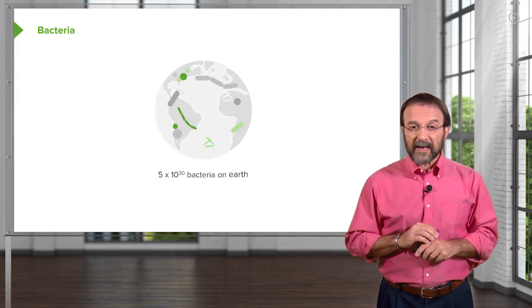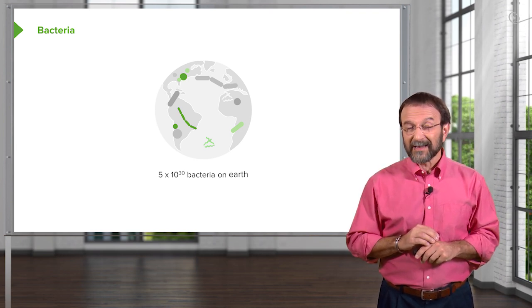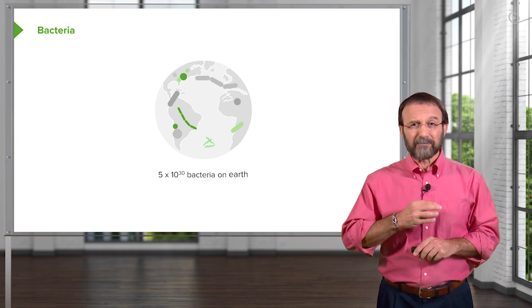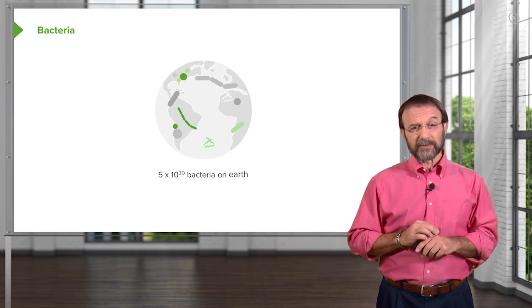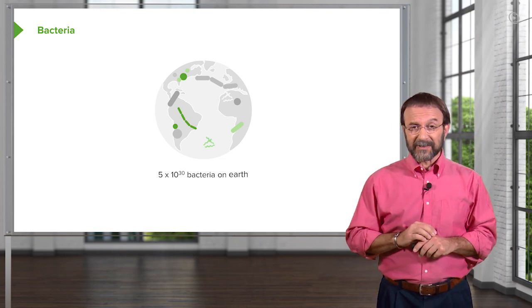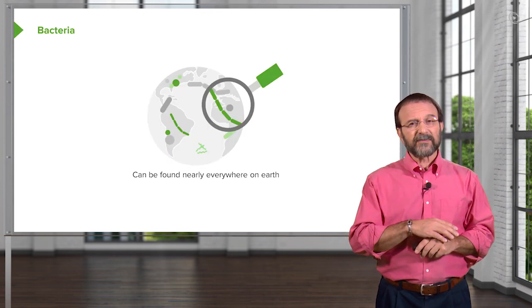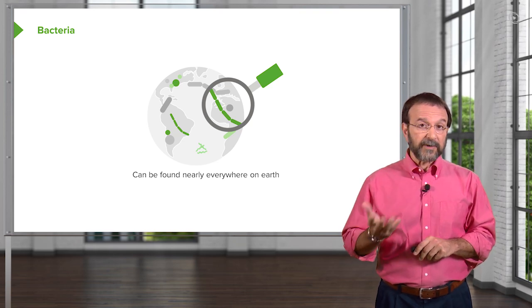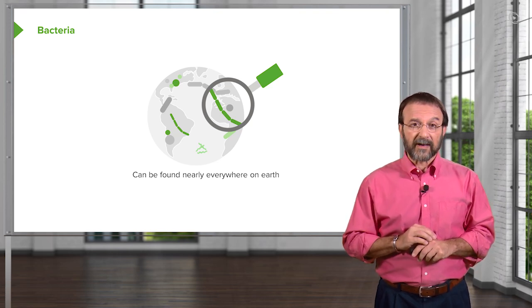There are many, many bacteria on Earth. Our estimate is about 5 times 10 to the 30th — that's a huge number, actually bigger than we can really comprehend. You may be used to about a billion, which is a giga of something. Well, 10 to the 30th is a lot more than that. Bacteria can be found in every environment on Earth — wherever you look, whether it be in soil, in the oceans, in rocks even, you can find bacteria.